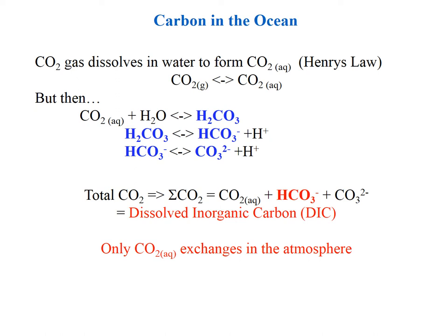CO2 gas in the atmosphere undergoes dissolution — some of the gas will dissolve into the ocean. This is the same for basically all gases; all gases will dissolve in a liquid. But for carbon dioxide specifically, the dissolved CO2 actually reacts with water, and because there's an abundance of water in the ocean, that forms carbonic acid. Carbonic acid is a very, very unstable molecule.